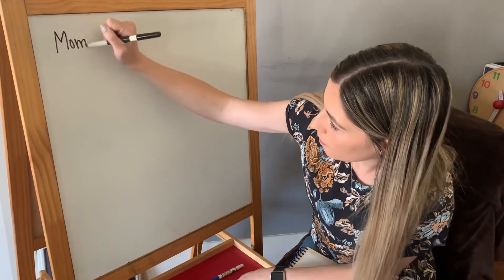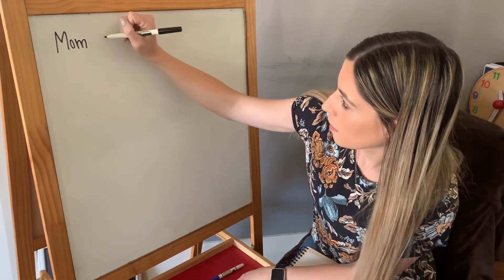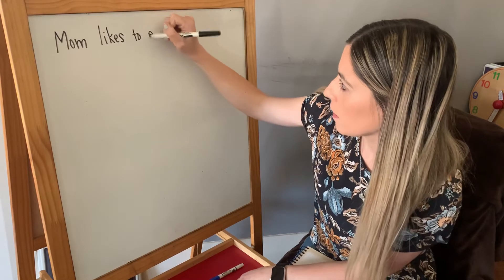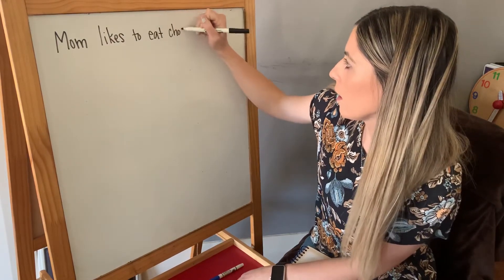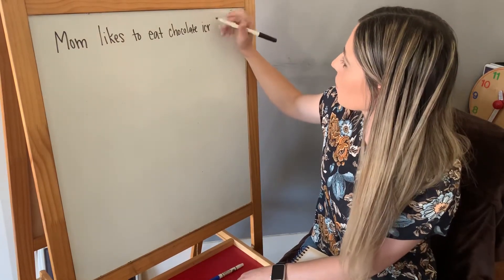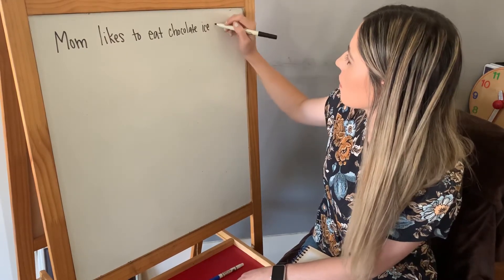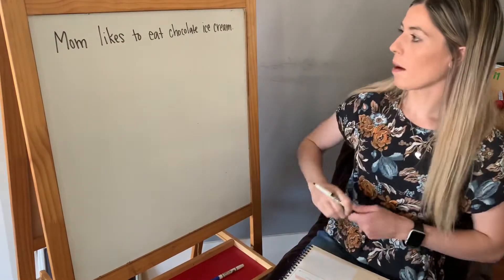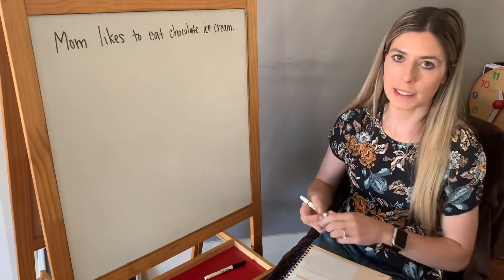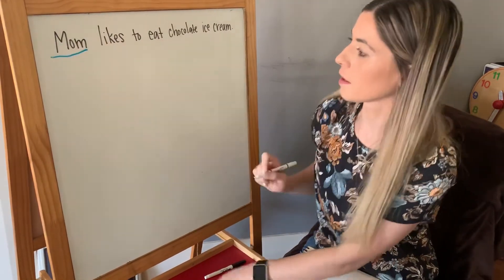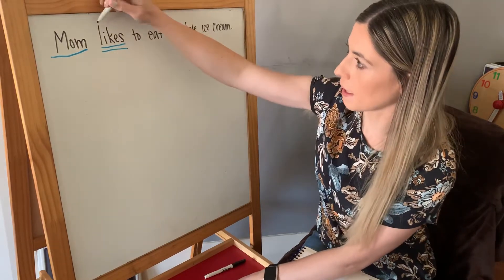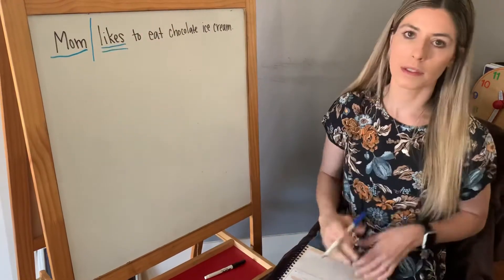Mom likes to eat chocolate ice cream. Who's the subject? Who or what is the sentence about? It's about mom. I'm going to underline it once. Then what is mom doing? She likes. So I'm going to underline that twice. And I'm going to split my sentence between subject and predicate. Easy peasy.